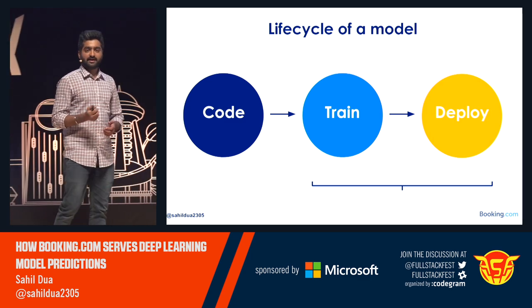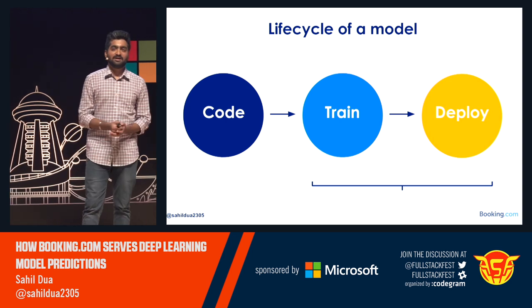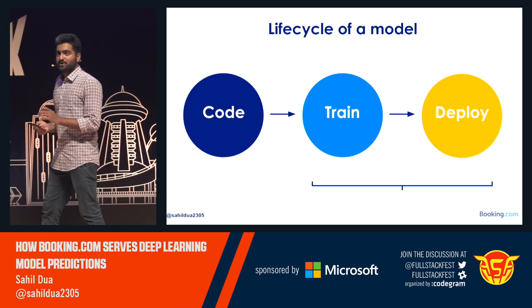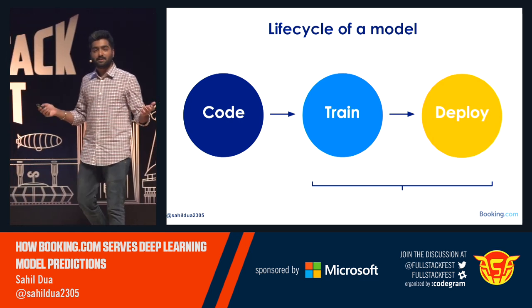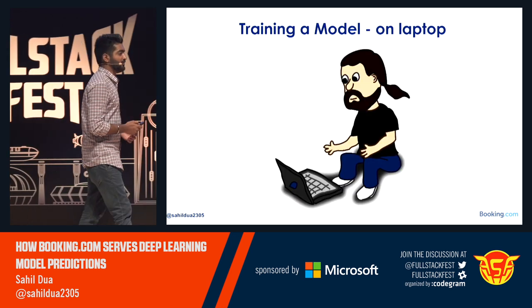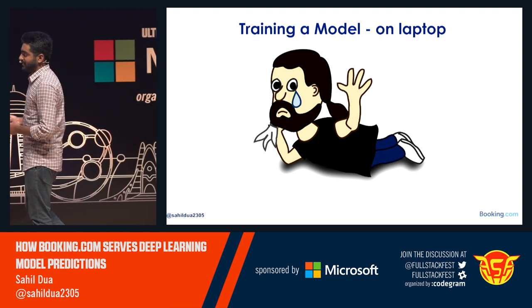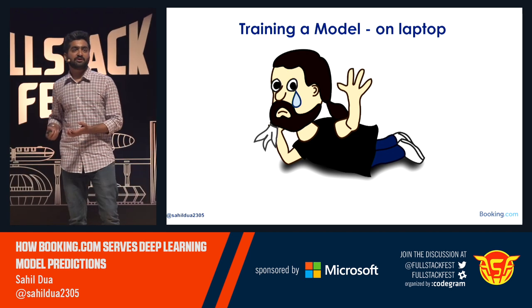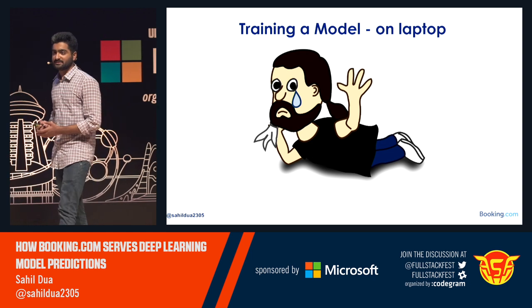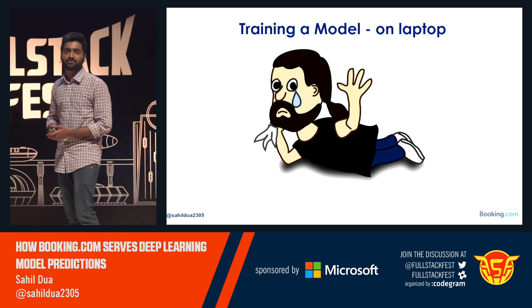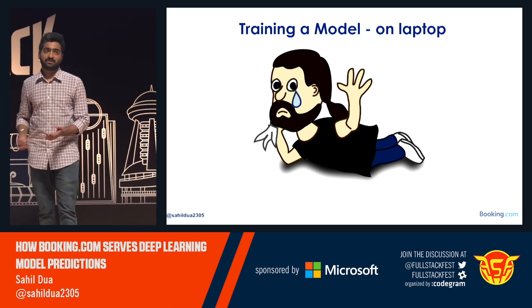Training on production data and deploying constitute our deep learning production pipeline. You might ask why training is part of the production pipeline — you can train on a laptop, right? But if you do, your training data may be too large to hold in memory, and your laptop has limited CPU cores and GPUs. So if you want to speed up training, you should not train on your laptop. We use big servers with lots of CPU cores and powerful GPUs.